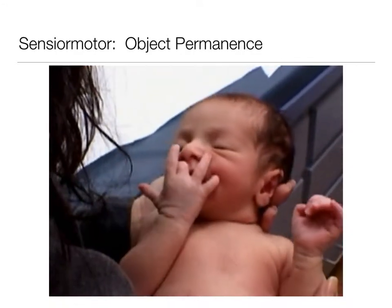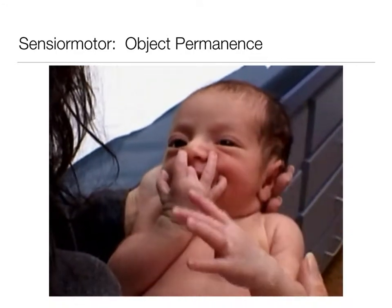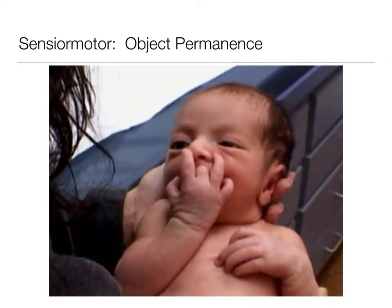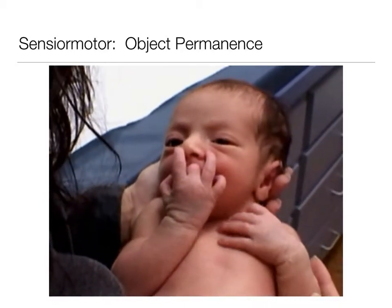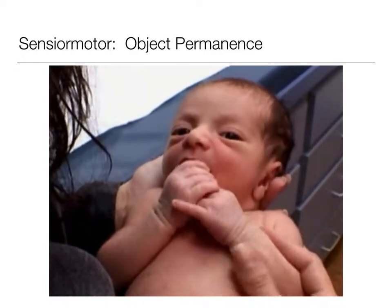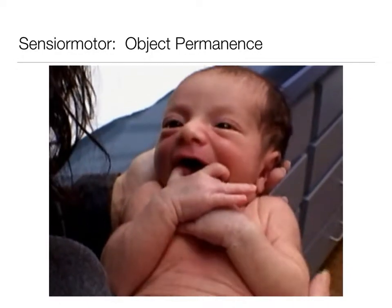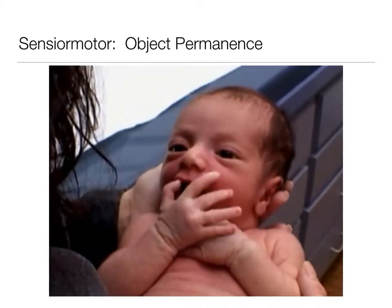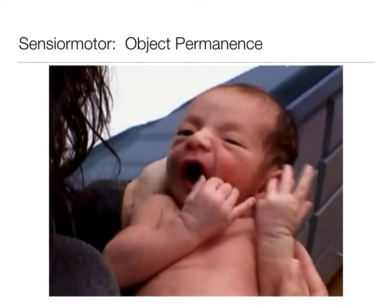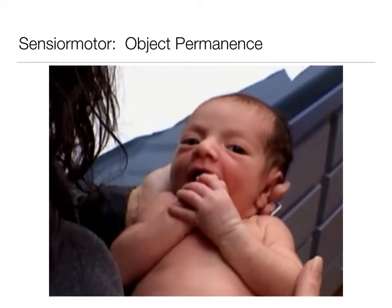At the beginning of the sensorimotor period, an infant's actions are confined to innate reflexes like sucking and grasping. Soon infants begin to show what Piaget called primary circular reactions. One-week-old Aiden moves his hand near his mouth by chance, and in the next few weeks begins to reproduce this pleasurable experience, eventually sucking his thumb or hand purposefully.